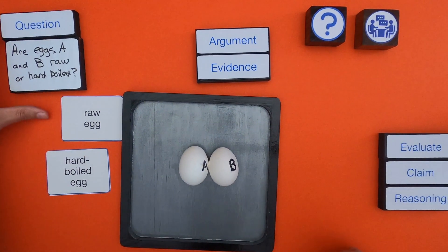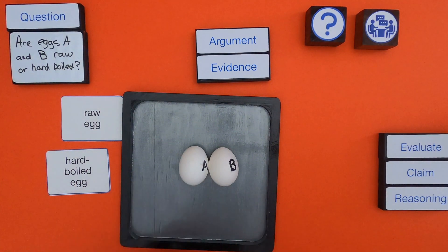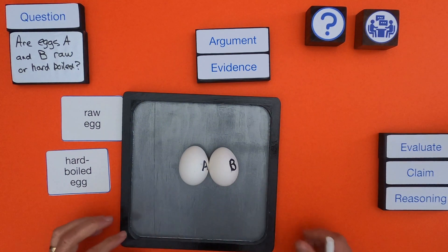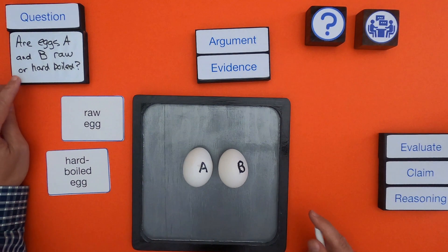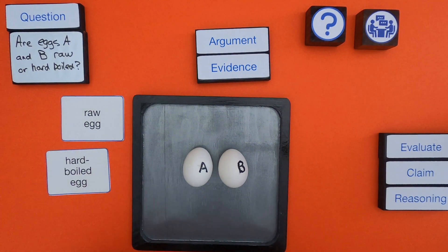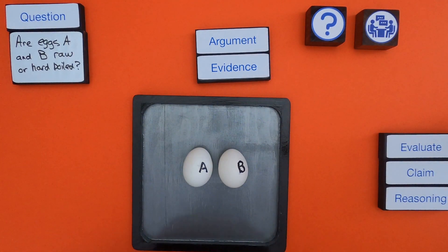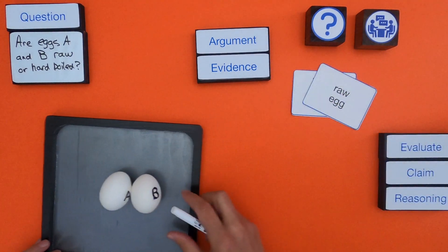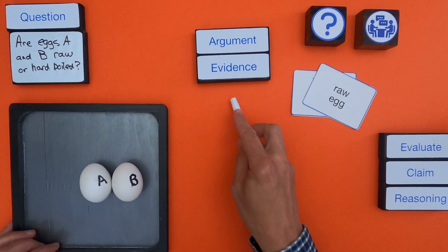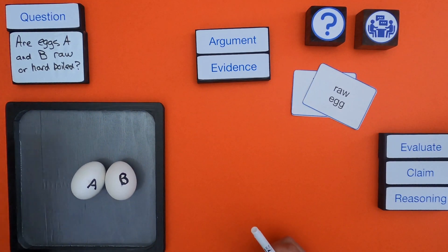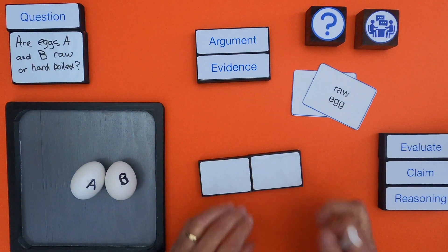So the question we're trying to answer is: are eggs A and B raw, are they hard-boiled, is one raw and the other hard-boiled, or vice versa? When you're doing an argument, you want to make sure that the question and the answer to the question is not always clear — that's the reason we do an argument, to figure out which of these it is. The first thing I always do is start to construct some evidence as we look at and observe the eggs.